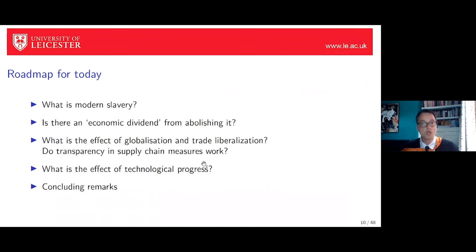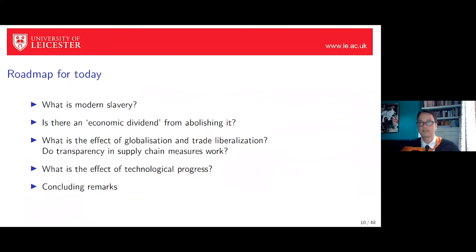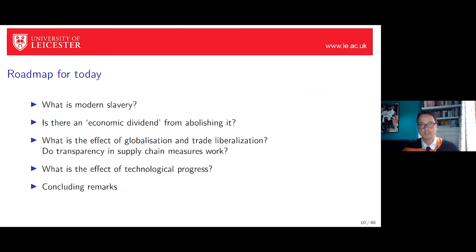The questions today include: What is modern slavery? Is it a good idea to end slavery — is there a 'freedom dividend'? What do globalization and trade liberalization imply for the prevalence of forced labor? What do transparency and supply chain measures do — and do they work? And finally, what does technological progress imply for forced labor?